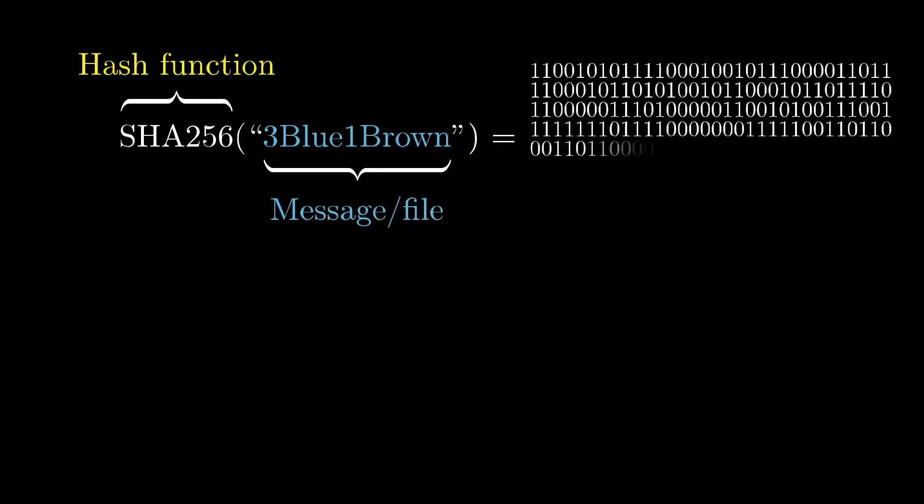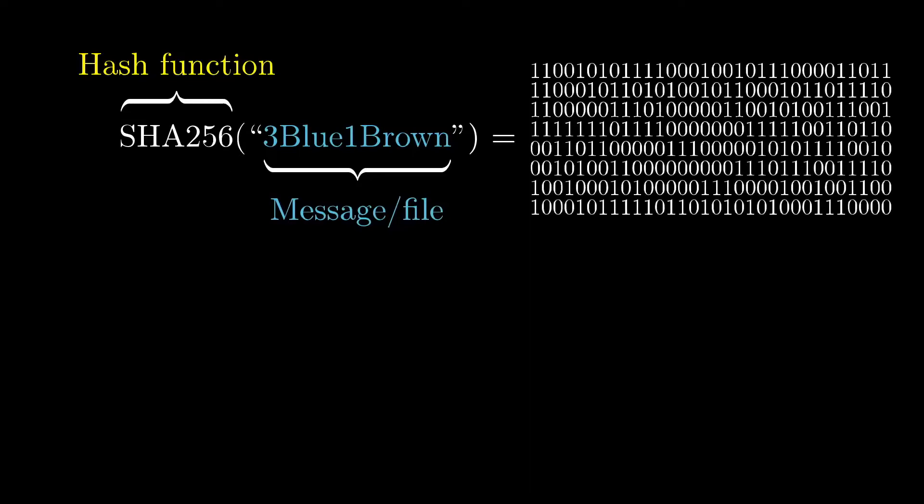This output is called the hash or the digest of the message, and the intent is that it looks random. It's not random—it always gives the same output for a given input—but the idea is that if you slightly change the input, maybe editing just one of the characters, the resulting hash changes completely.